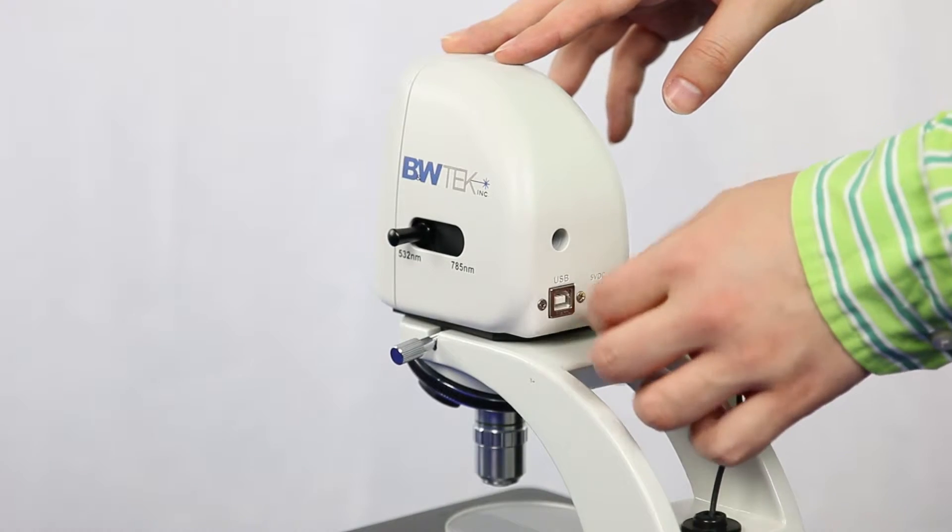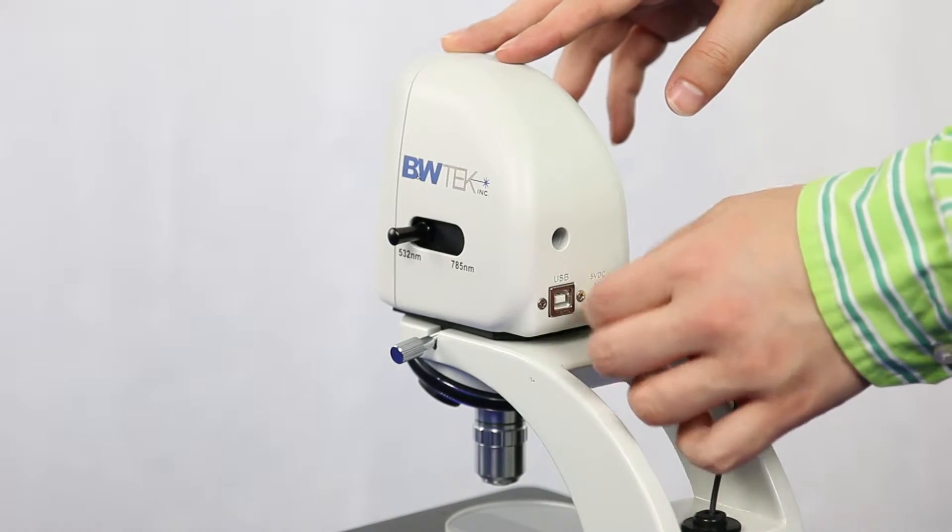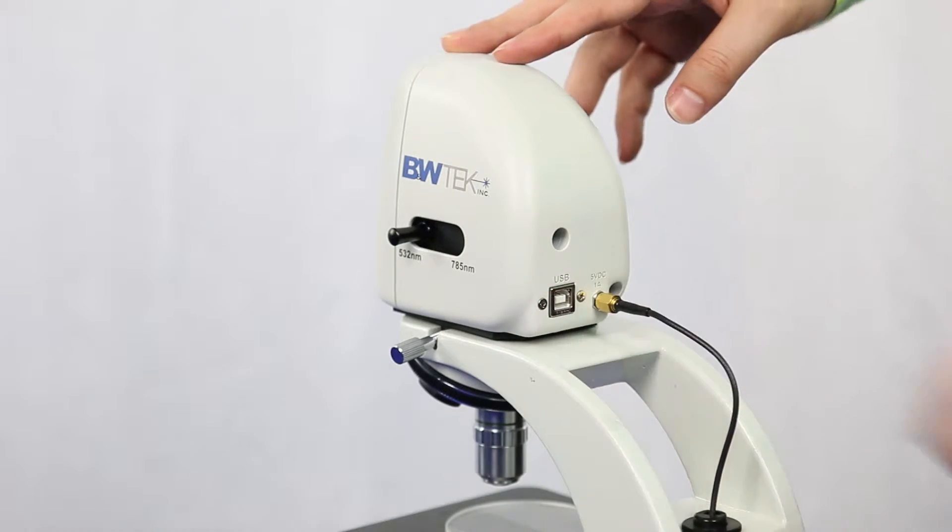You'll then want to take the 5 volt auxiliary cable for the microscope light and connect it to the back of the microscope head.